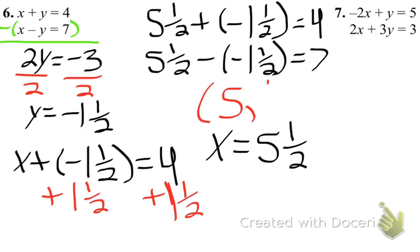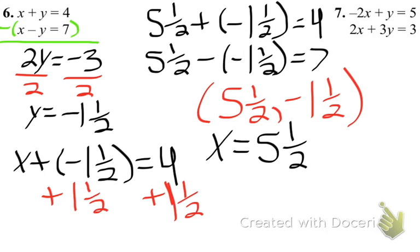Many students lost points on this question for having the wrong sign — missing the negative 1.5 or having 5.5 as negative. These were very small mistakes when grading. Be careful with negatives, stay neat and organized, and don't forget your old skills because you're still using them.